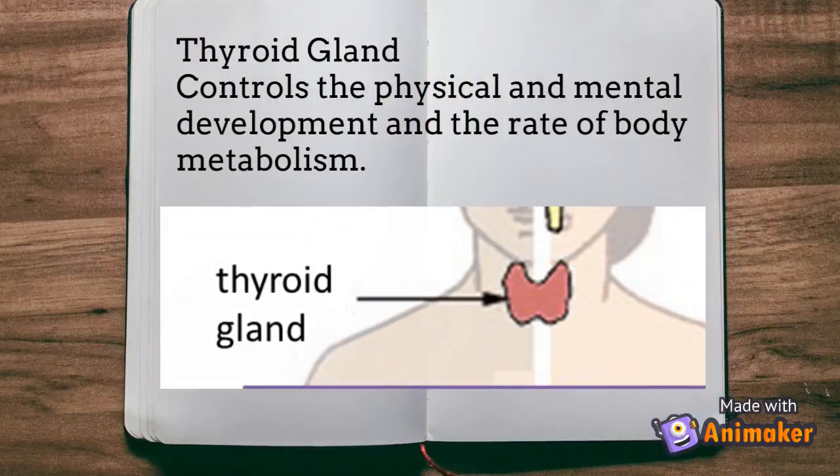The second one is the thyroid gland. This gland is situated at our trachea, as you can see in the diagram. The function of the thyroid gland is to control the physical and mental development and the rate of body metabolism.